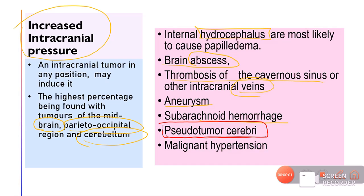Pseudotumor cerebri, previously called benign intracranial hypertension, is a disorder with raised CSF pressure but no intracranial space-occupying lesion. It tends to occur in obese females and they complain of headache, photopsia, and transient blurring of vision. Pseudotumor cerebri is a diagnosis of exclusion — it should only be considered after ruling out other causes of raised ICP, particularly in obese women.